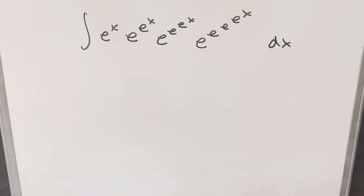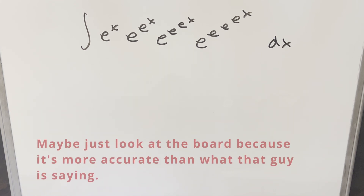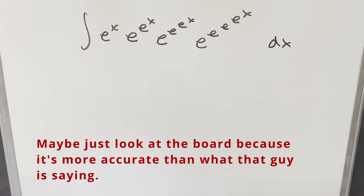We have a pretty ridiculous looking integral. We've got the integral of e to the x times e to the e to the x times e to the e to the e to the e to the x times e to the e to the e to the x dx.